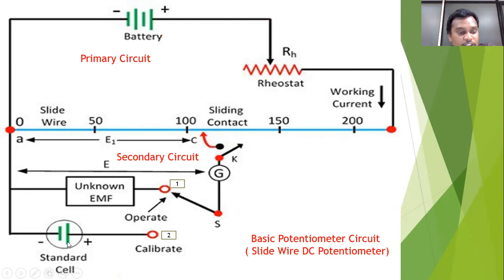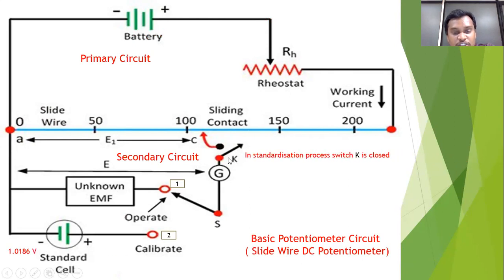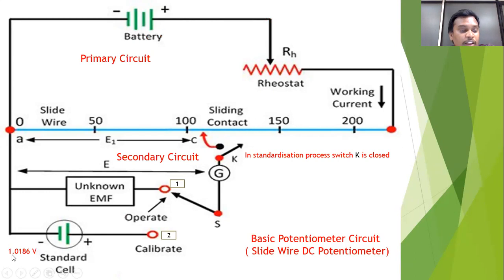In the secondary circuit, there is a standard cell, the unknown voltage, a main switch, a galvanometer, and a key switch. The standard cell voltage should be a constant value — its value is 1.0186 volts. This is a familiar voltage value for a standard cell. If asked in an exam what the standard cell voltage is, we write blindly that it is 1.0186 volts.